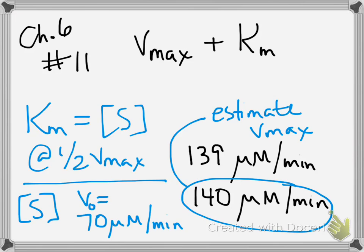And when you look on the table and see that, you can see that the substrate concentration at that velocity is 1 times 10 to the negative 5th molar. So that'll be your Km.